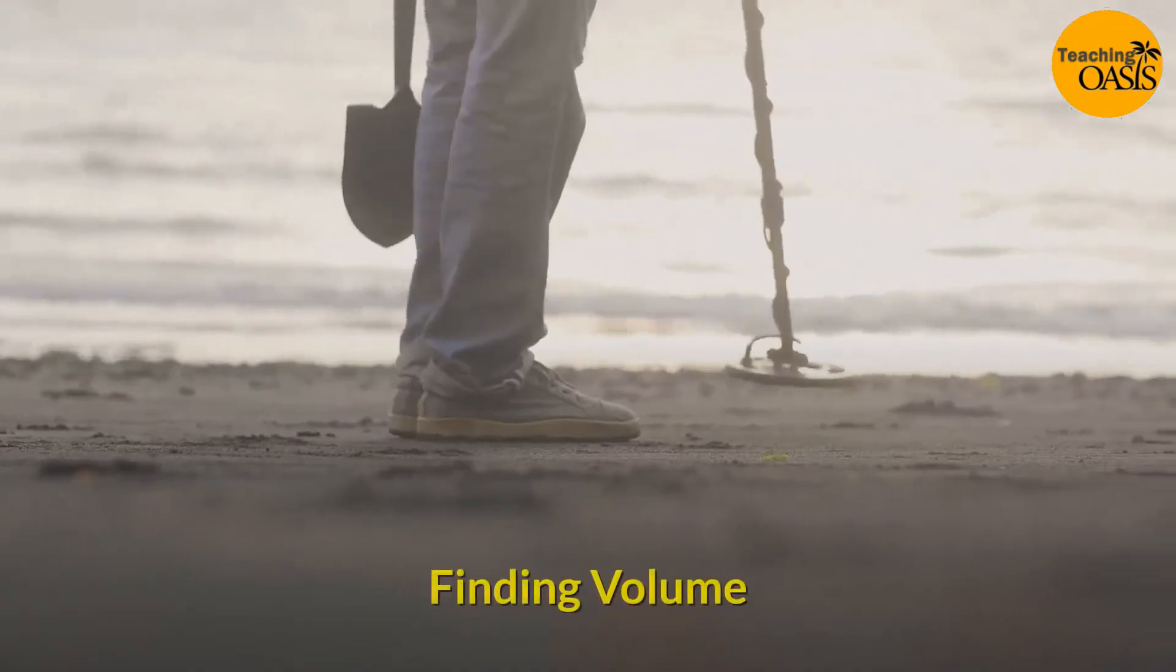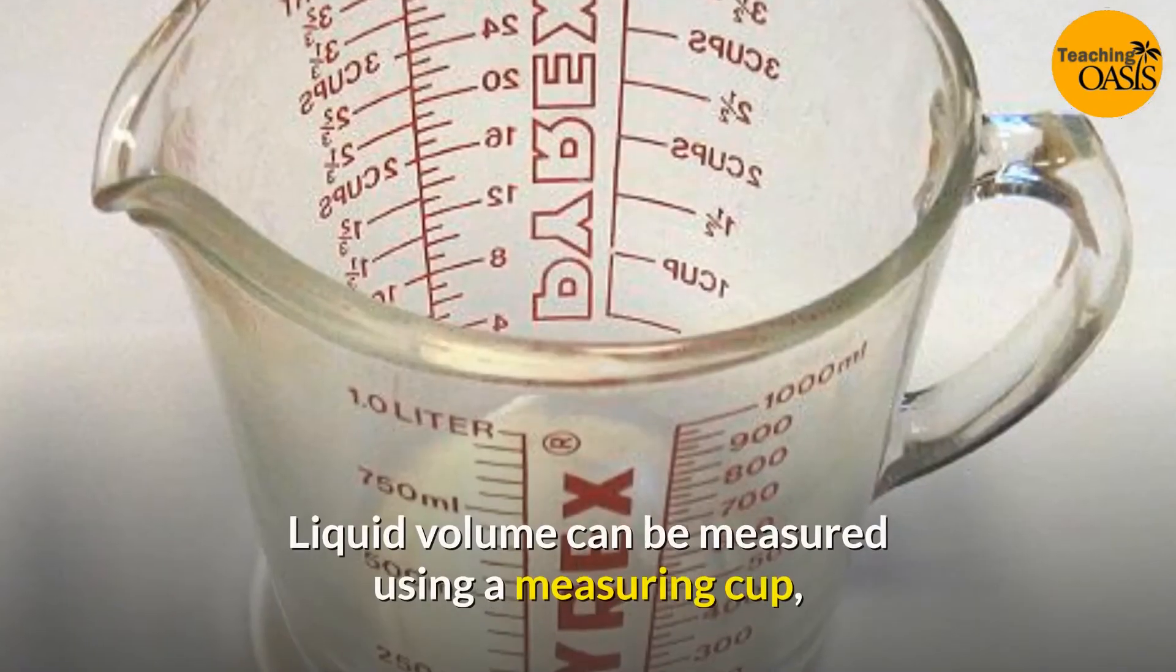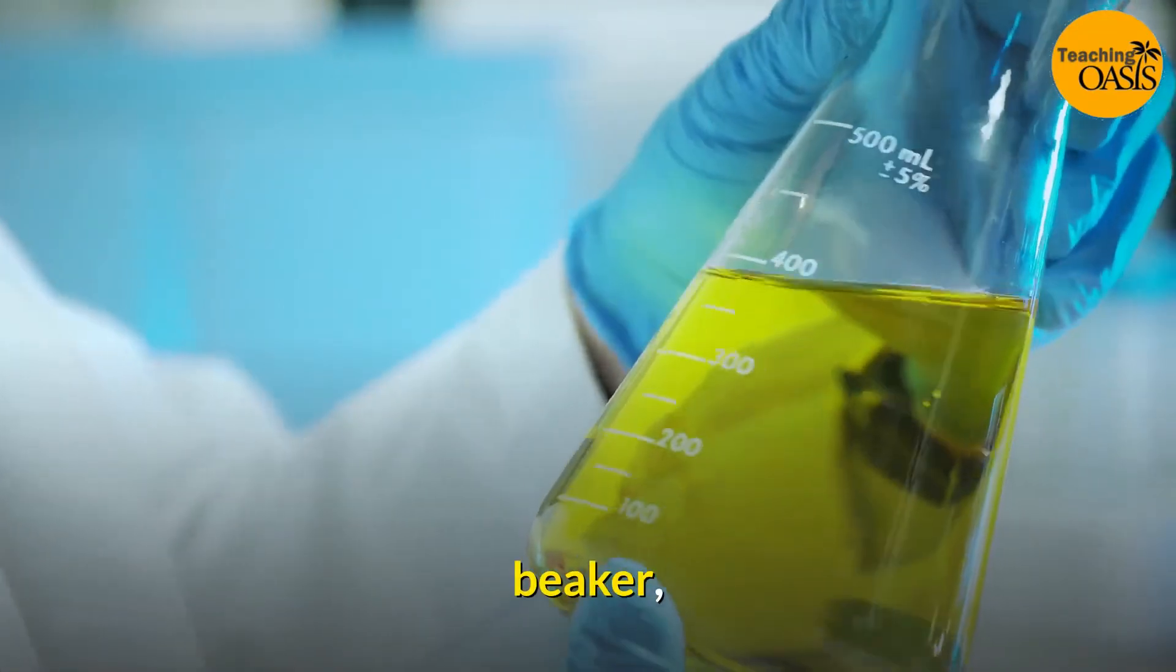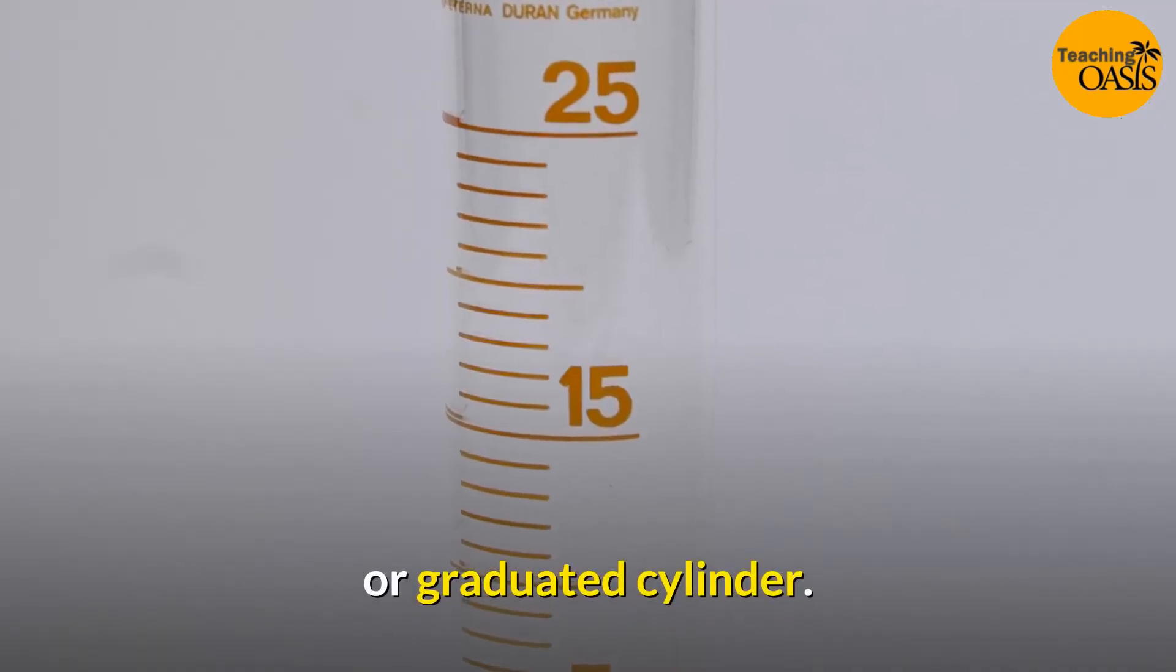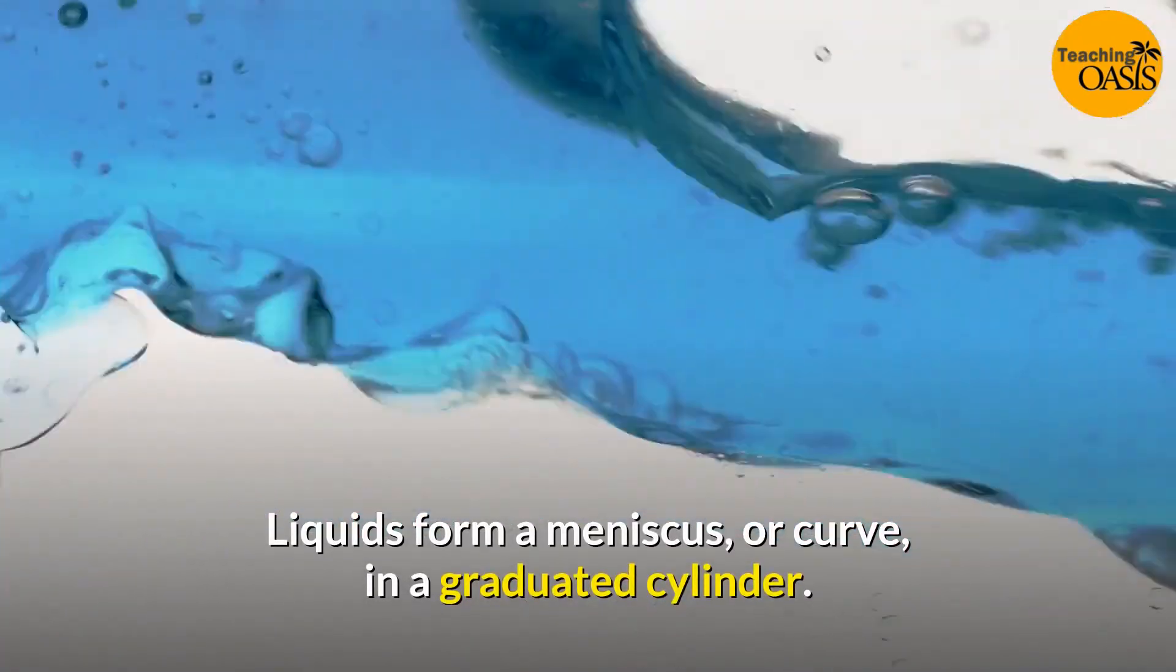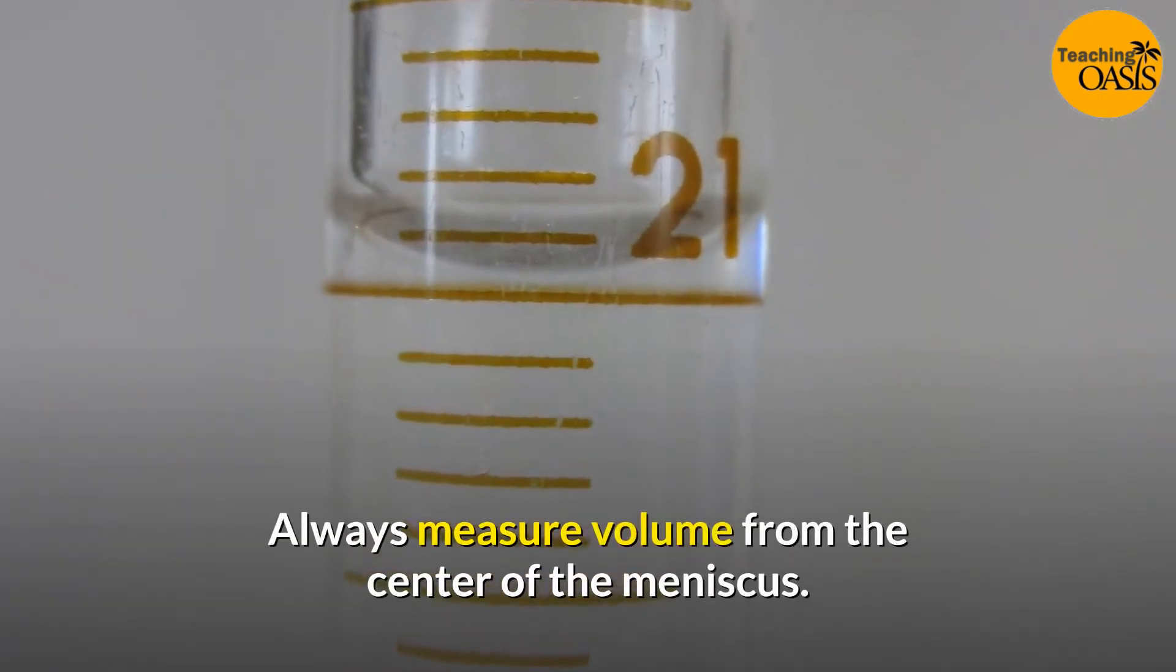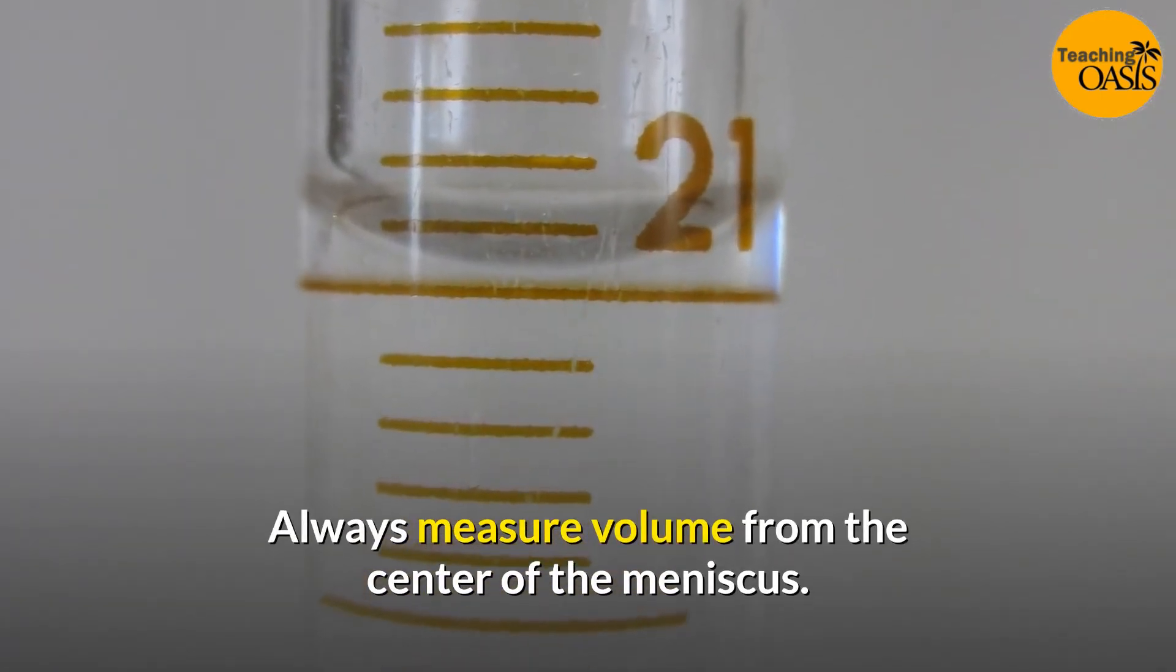Finding liquid volume: Liquid volume can be measured using a measuring cup, beaker, or graduated cylinder. Liquids form a meniscus, or curve, in a graduated cylinder. Always measure volume from the center of the meniscus.